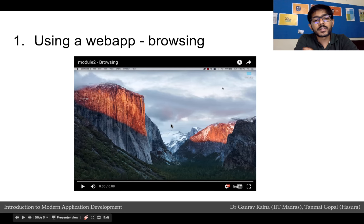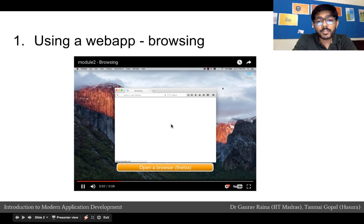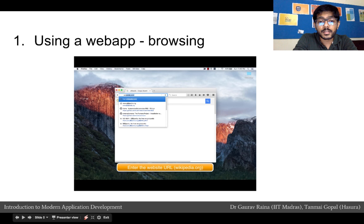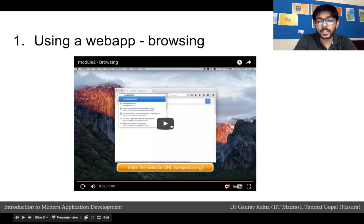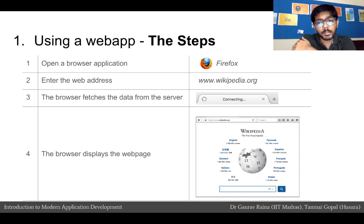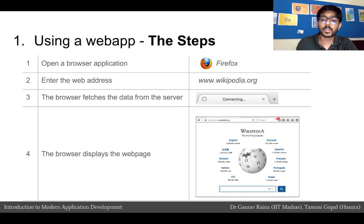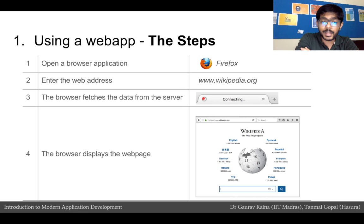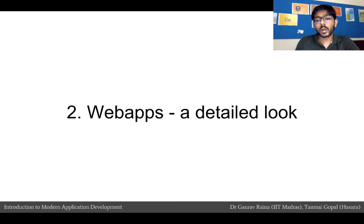Let us look at the typical experience of browsing a web app. For example, we open up Firefox, we enter the Wikipedia address, Firefox loads the page, and we see the Wikipedia page. If you look at this carefully, there are four main steps: we opened a browser, we entered the web address, the browser fetched data from the server — which is why you saw a connecting icon — and then the browser displayed the webpage. Now let us go into a more detailed understanding of each of these four steps.